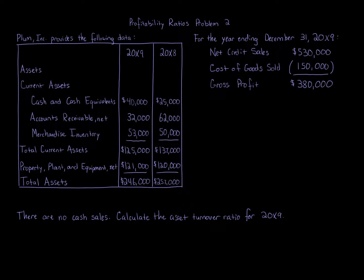For the year ending December 31st, 20x9: net credit sales $530,000, cost of goods sold $150,000, gross profit $380,000. There are no cash sales. Calculate the asset turnover ratio for 20x9.